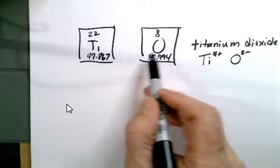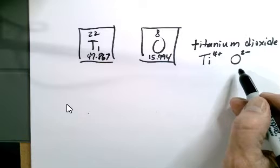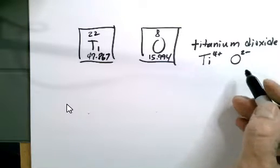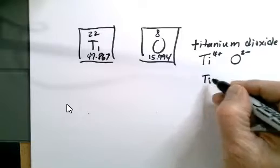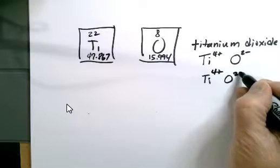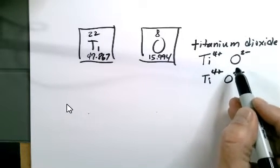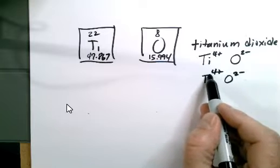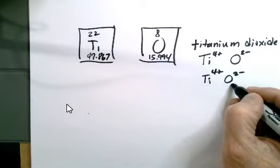To find the formula mass of titanium dioxide, the first thing we need to do is balance this formula. If we have Ti4+ and O2-, how many oxygens would we need to make minus 4 to cancel this plus 4 and make a neutral compound? We would have to have two oxygens.